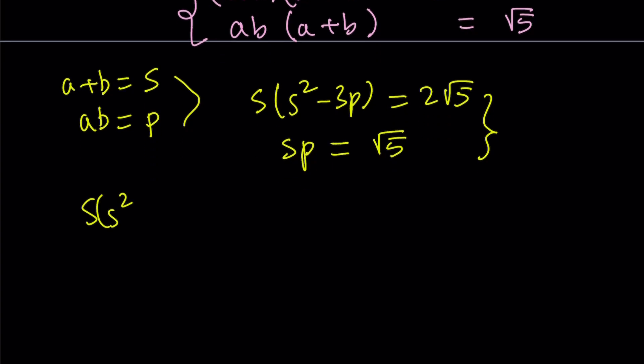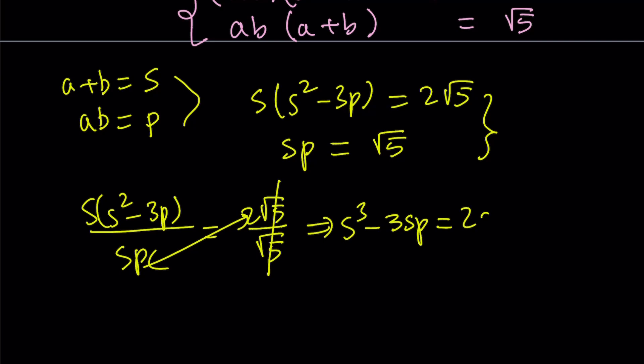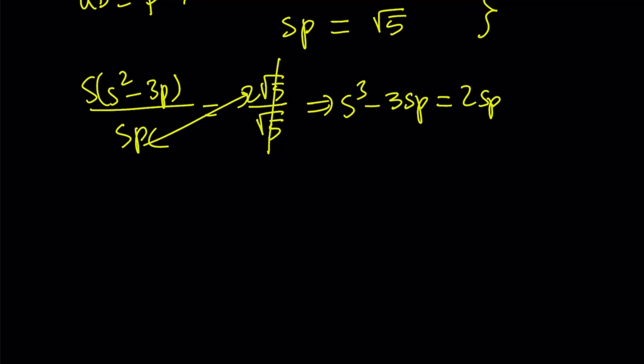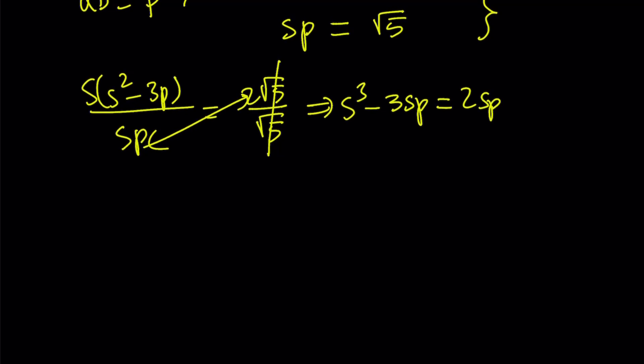So we can write it like this. Actually, let's not write the equal sign yet. We're going to divide it by this. And on the other side, we're going to have 2√5 divided by √5. √5 is going to cancel out, leaving us with 2. Let's go ahead and multiply here and cross multiply.